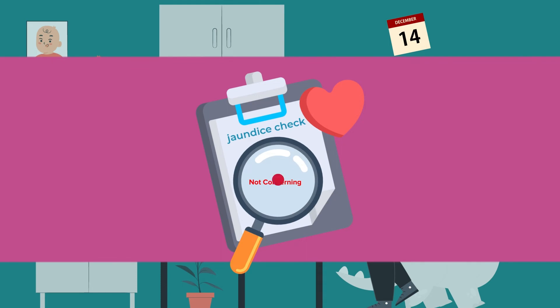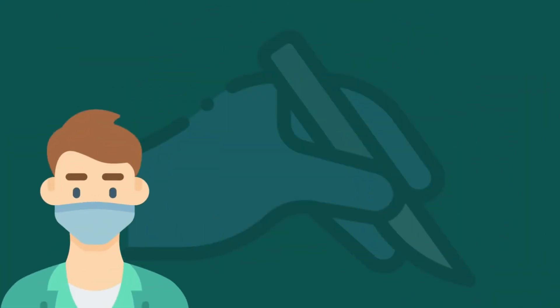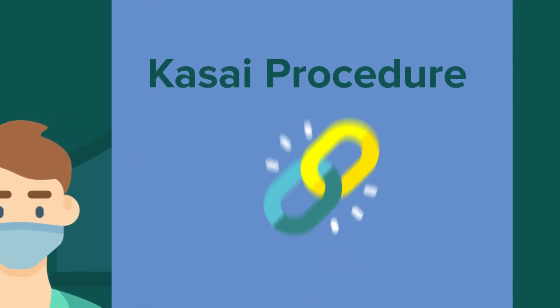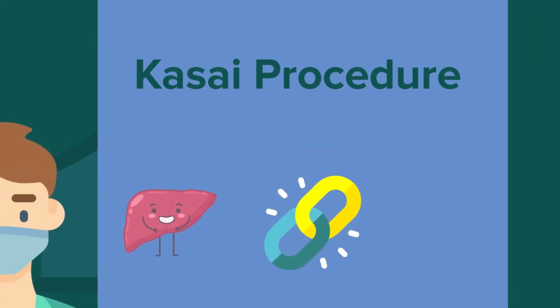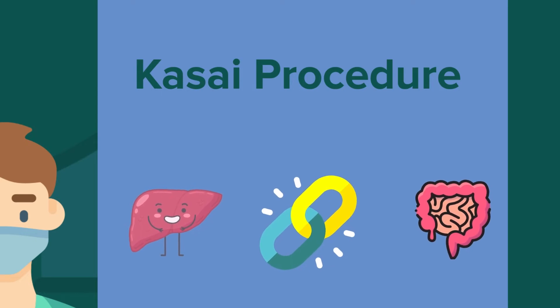When evaluating a baby for biliary atresia, a surgeon will perform a specific surgery known as the Kasai procedure. This involves connecting the bile duct area of the liver to the small intestine to allow bile to drain properly.